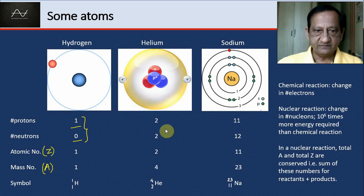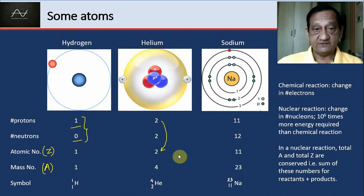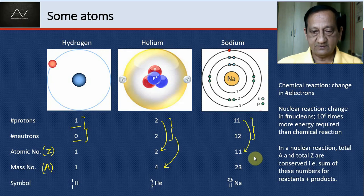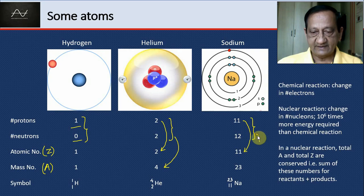Helium has 2 protons and 2 neutrons, so Z is 2 and A is 4, written as 4, 2, He. Sodium has 11 protons and 12 neutrons, so Z is 11 and A is 23, written as 23, 11, Na.